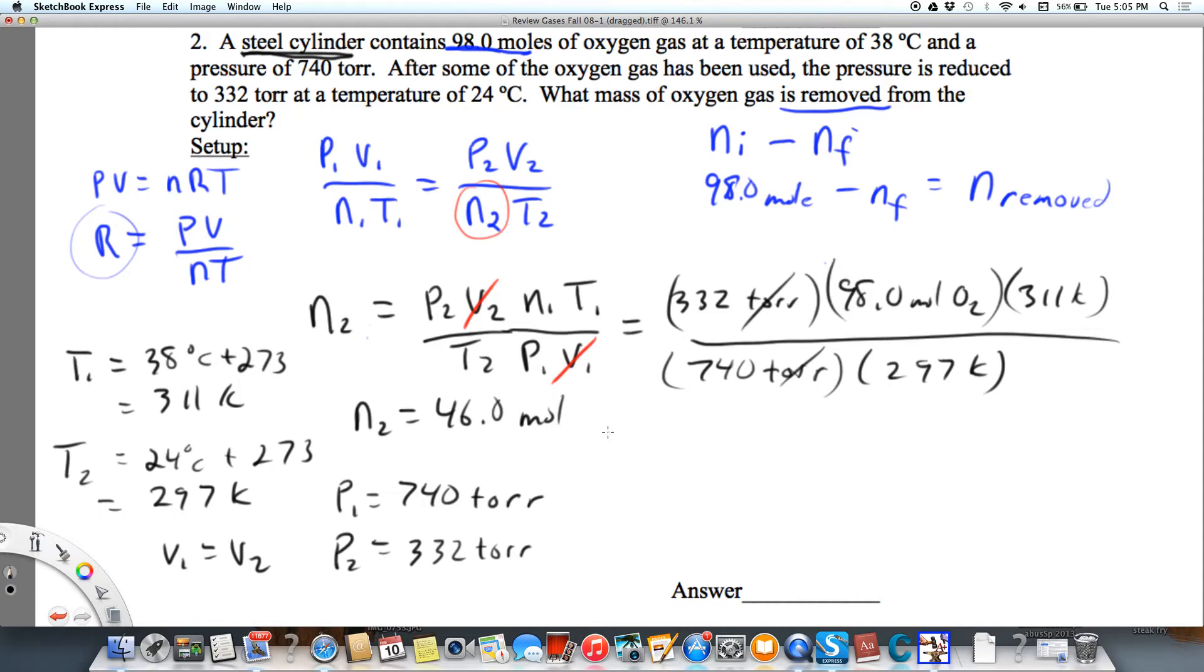So now we want to calculate moles of oxygen removed. That's going to equal our initial moles, 98.0 moles of O2, minus 46.0 moles O2. So this equals 52.0 moles O2 that was removed from the flask.